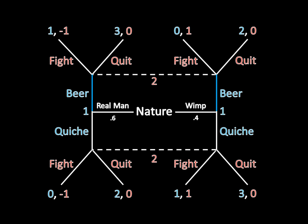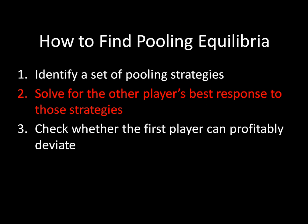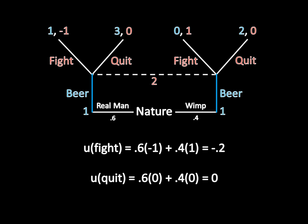If there is a pooling equilibrium, we know that player one's actions must look like this. We can see that solving this game will not be straightforward — the quiche strategy is off the path, and we must therefore deal with the messiness that comes along with that. The next step to solve for a pooling equilibrium is to find the other player's best response to those strategies. If player two fights after observing beer, she earns negative one 60% of the time, and one 40% of the time. That works out to negative 0.2 in expectation. If she quits, she earns zero regardless. Zero is greater than negative 0.2, so she should quit.